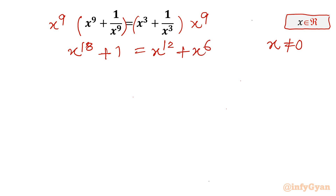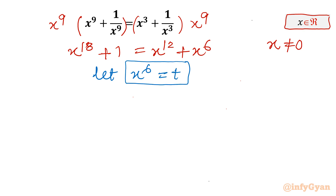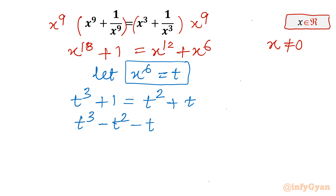Now I can use substitution. As we can see the powers are multiples of 6, so let us consider x⁶ = t. So I will write x¹⁸ as t³, plus 1 equals x¹² which is t², times x⁶ which is t. Taking all terms to one side: t³ - t² - t + 1 = 0.